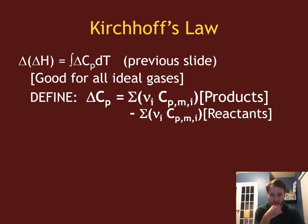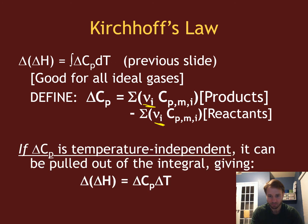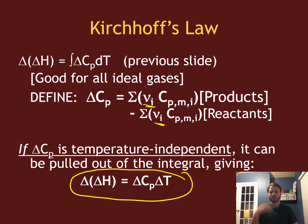Now when we apply Kirchhoff's law, often we're going to assume that Cp is constant for our products and our reactants. Delta Cp, as a reminder, is the Cp of the products minus the Cp of the reactants — often the molar values — multiplied by the stoichiometric coefficients of those species. And if we assume Cp's are constant with temperature, then this equation simplifies down to the change in the change in enthalpy of my reaction with temperature being related with the change in heat capacities of my products minus reactants multiplied by their stoichiometric coefficients, times the change in temperature.